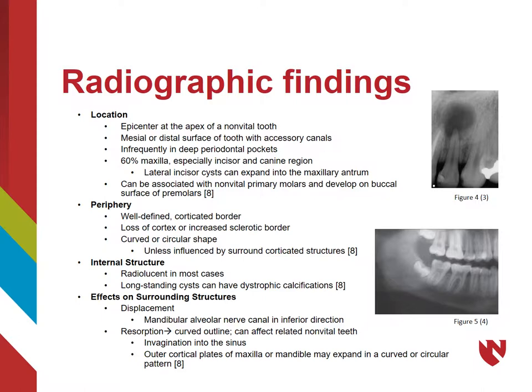Radicular cysts can affect surrounding structures, causing inferior displacement of the mandibular alveolar nerve canal. Resorption can also lead to a curved outline, which can in turn affect related non-vital teeth. This can cause invagination into the sinus or the expansion of outer cortical plates of the maxilla or mandible in a curved or circular pattern.